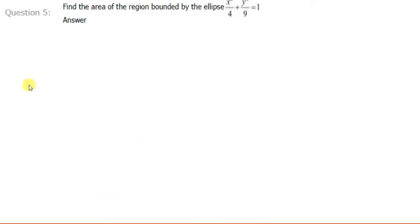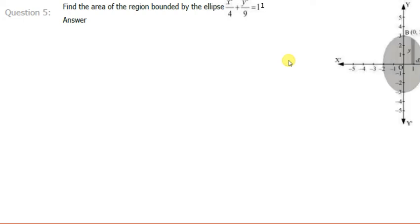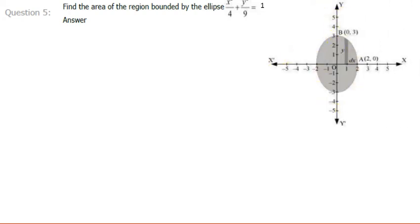This is the 5th question: find the area of the region bounded by the ellipse x²/4 + y²/9 = 1. It is the ellipse with major axis on the y-axis. Its major axis is the y-axis because its denominator is greater, and the minor axis is the x-axis. The length of the minor axis is 2 because it can be written as 2². So b = 2. Comparing with x²/b² + y²/a² = 1, a = 3.